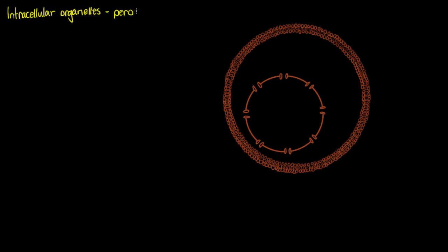If it's an organelle we know automatically that it's going to be in eukaryotic cells. So we've got a eukaryotic cell here with its nucleus and we're going to have these small vesicle-type structures called peroxisomes and they look a lot like lysosomes.